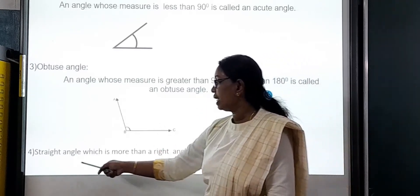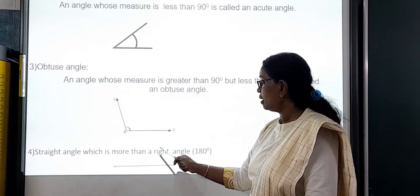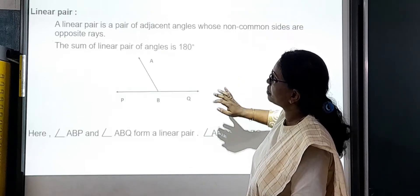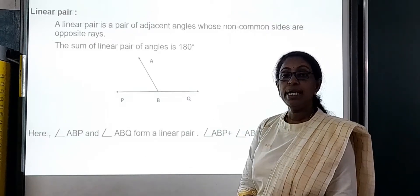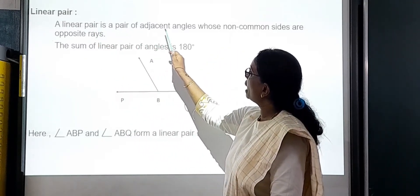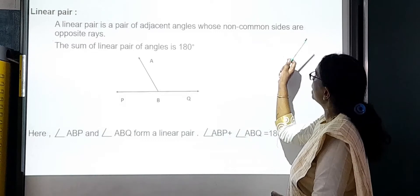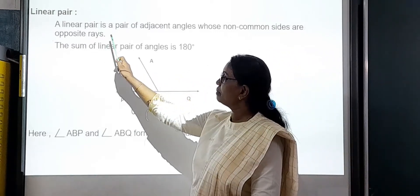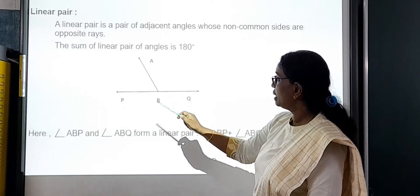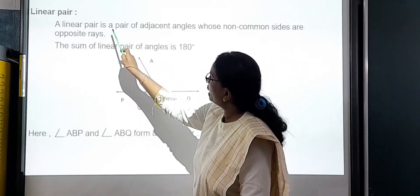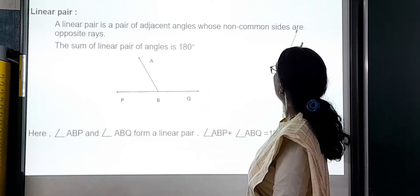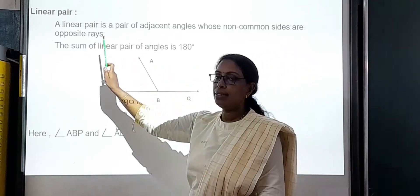And next one is the straight angle — a straight angle measures 180 degrees. And next is the linear pair. A linear pair is a pair of adjacent angles whose non-common sides are opposite rays. The sum of a linear pair of angles is 180 degrees.